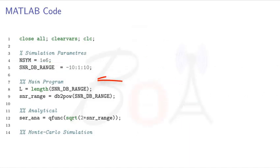Our main program starts here. First, we compute the length of SNR_DB_RANGE vector and store it in the variable L. Next, we use the MATLAB function db2pow to compute the power measurement of each decibel value of the vector SNR_DB_RANGE.